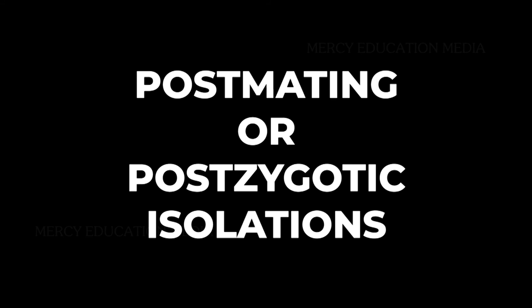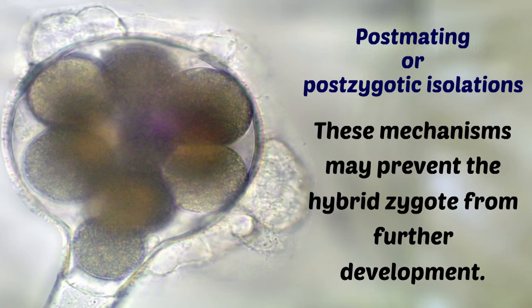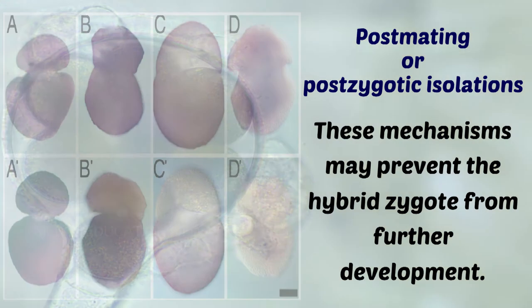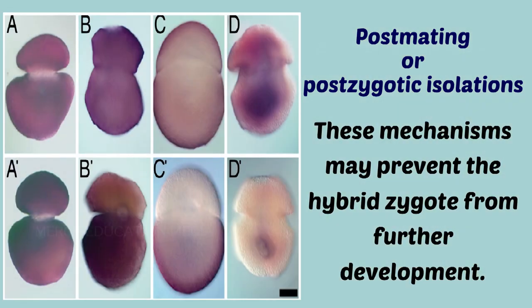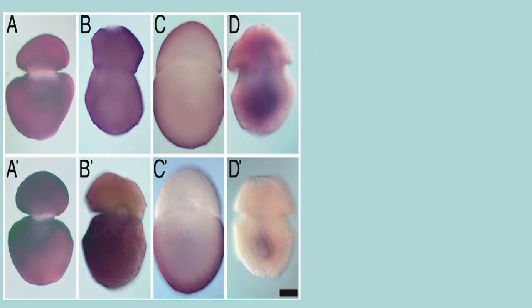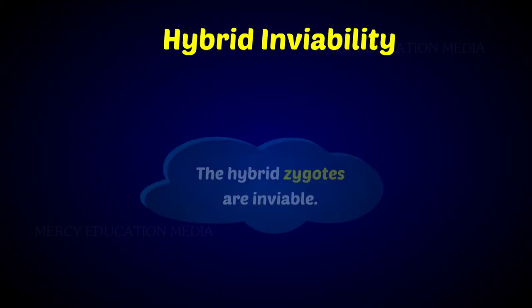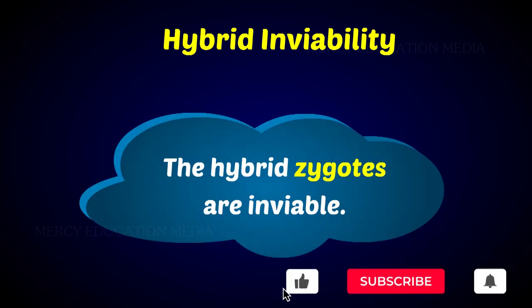What is post-mating or post-zygotic isolation? These isolating mechanisms, while allowing fertilization, may prevent the hybrid zygote from further development. What is hybrid inviability? The hybrid zygotes are inviable.